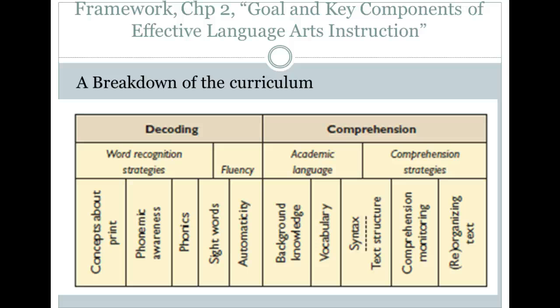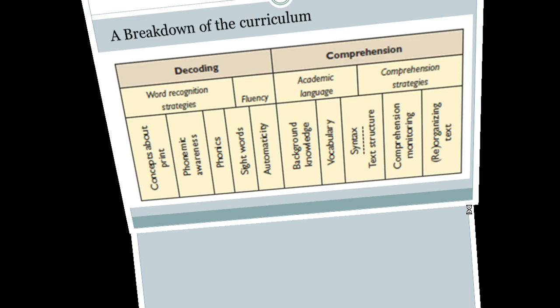Here's a visual that breaks down the curriculum. We have decoding on one side and comprehension on the other — both very important. In decoding: word recognition is supported by concepts about print, phonemic awareness, phonics, and sight words; fluency is supported by sight words and automaticity. On the comprehension side, we need academic language — background knowledge, vocabulary, and syntax. Comprehension is supported by knowledge of text structure, which helps you make predictions and summarize the main idea, plus comprehension monitoring and reorganization of text.